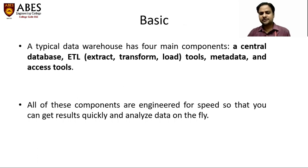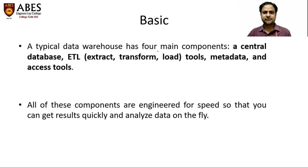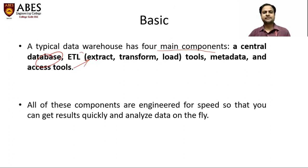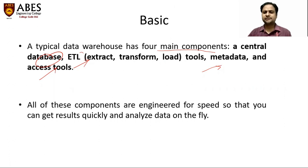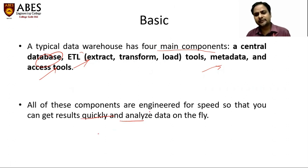After storing data at a particular place in a proper manner, different operations are performed on the data warehouse data. There are four main components. First is the central database. Then ETL operations are performed: extract, transformation, and load tools. Third is metadata, and fourth is the access tool — to access the right information at the right time and right place. These components are used to make specified data operations so that a user can get quick results and analyze data during runtime operations.